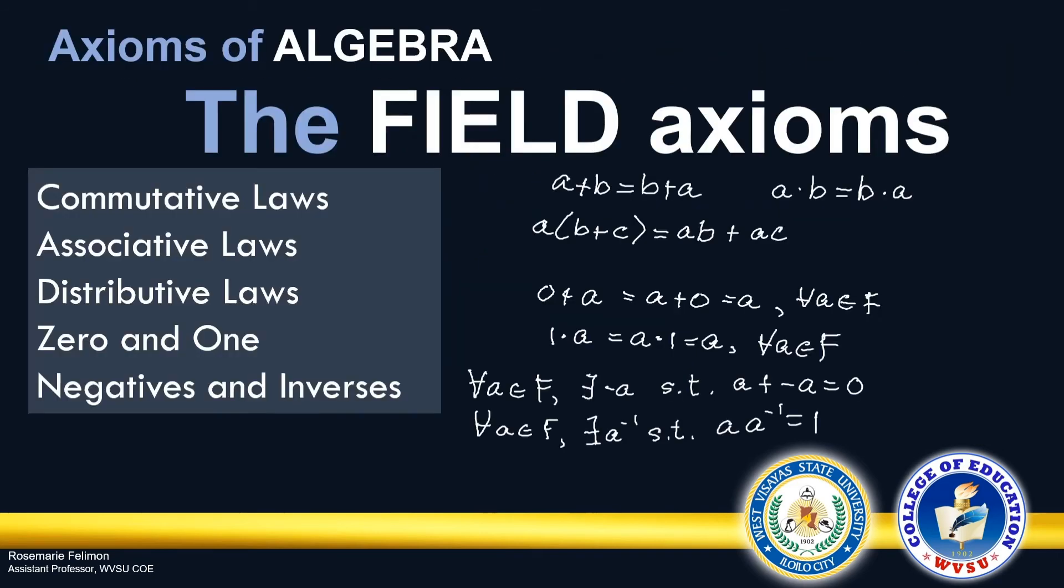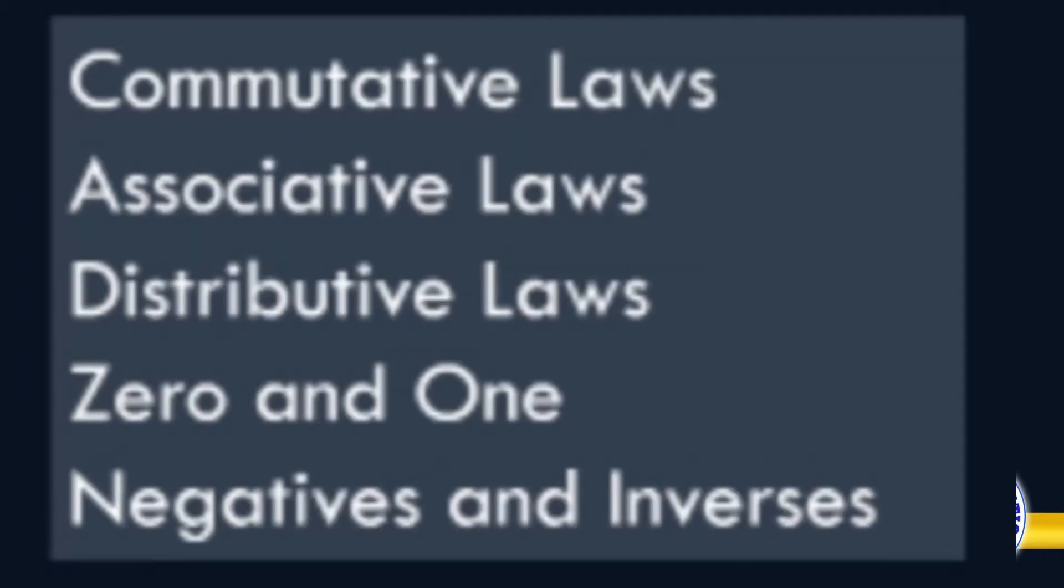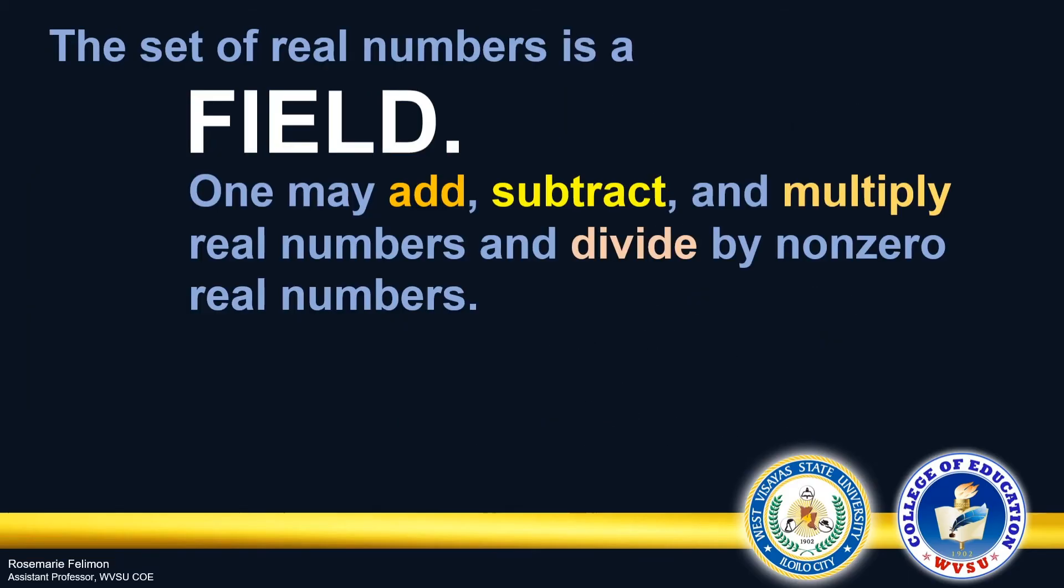Real numbers can also be described with certain properties. We have the field axioms, or the axioms of algebra. These are commutative laws, associative laws, distributive laws, the existence of the identity elements, 0 and 1, and the negatives inverses. And these axioms are established in the context that we have a set and two operations, addition and multiplication.